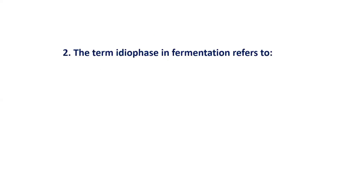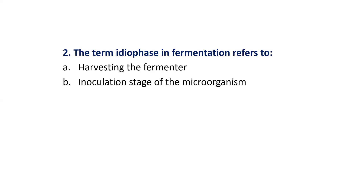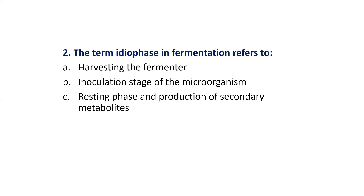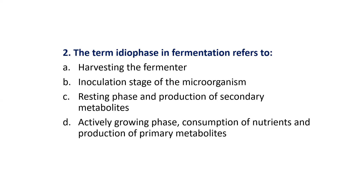MCQ 2: The term idiophase in fermentation refers to — Options are: Harvesting the fermenter; Inoculation stage of the microorganism; Resting phase and production of secondary metabolites; Actively growing phase, consumption of nutrients, and production of primary metabolites. The correct answer is Option C: Resting phase and production of secondary metabolites.